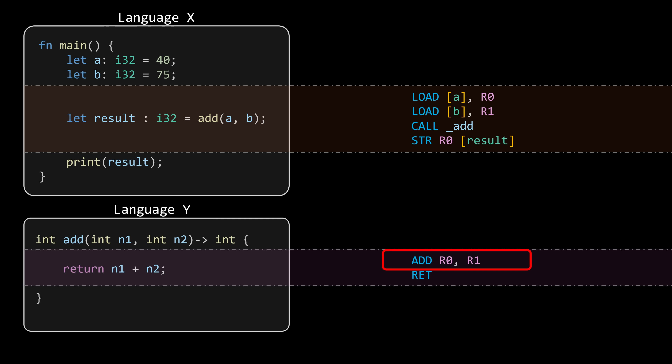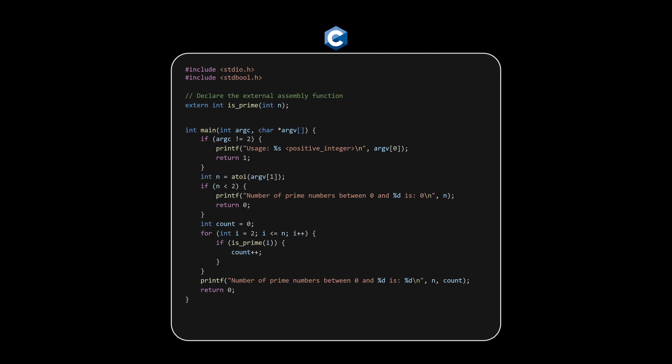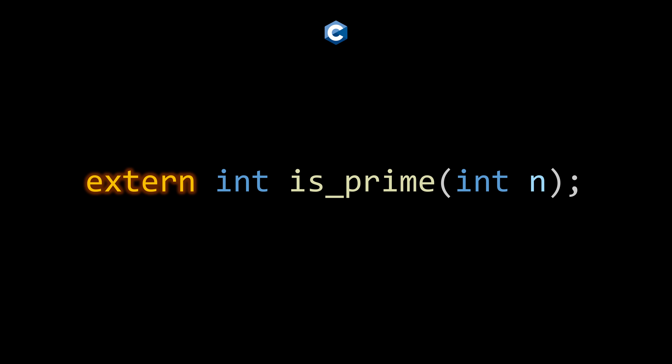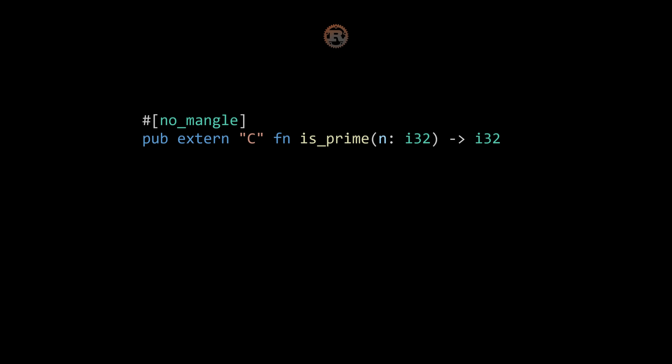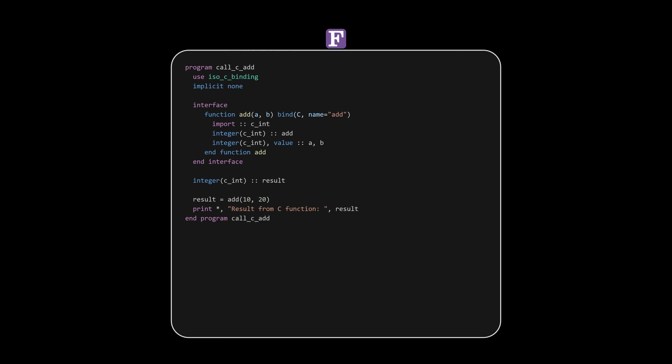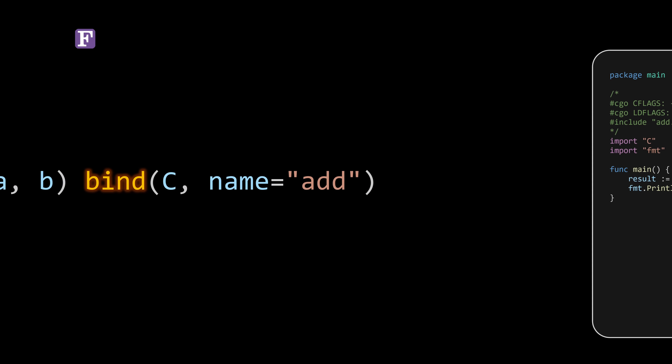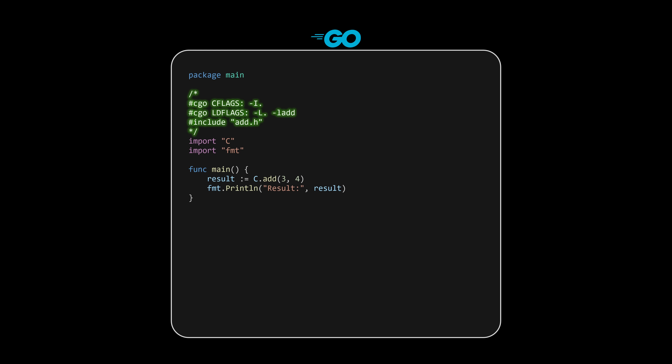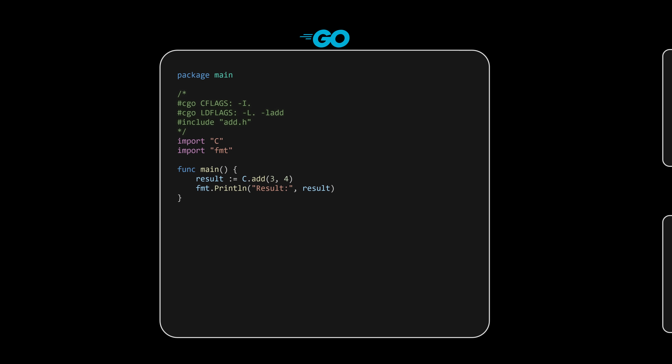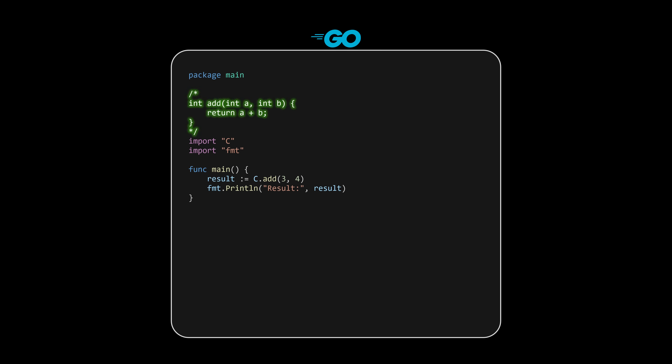As mentioned at the beginning of this video, these are low-level details we usually don't have to think about unless working at the system level. The good news is language designers know this. Modern languages provide tools, keywords, and compiler flags to make this process easier. In C, you might declare an external function using extern. In Rust, you'd use the extern keyword and the no_mangle attribute. In Fortran, you can use the bind attribute. In Go, you can use a special block of comments placed directly above the import C line to include C header files — and it even lets you write inline C code directly in your Go source files. Every language has its own way of doing this, but at compile time, these declarations all serve the same purpose: they tell the compiler that this function will interact with code written in another language, so please make sure the generated assembly follows the expected ABI.